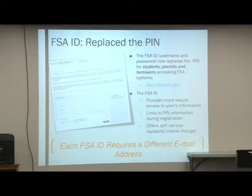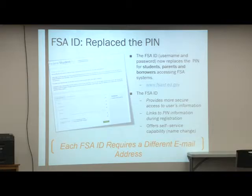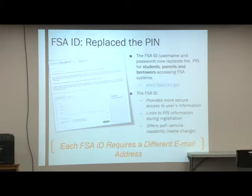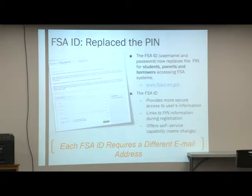I want to highlight a few common FAFSA errors: Social Security numbers, divorced and remarried parental information, income by parents or step-parents, any untaxed income, U.S. taxes paid, household size, and number in college. There are great additional information boxes for those questions. Also common are errors around real estate and investment net worth and what assets to include. If corrections need to be made, students can log back into the FAFSA website, make corrections, and resubmit those corrections to the schools on their FAFSA.